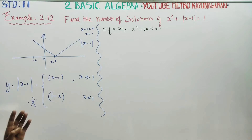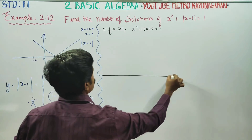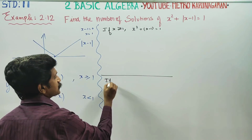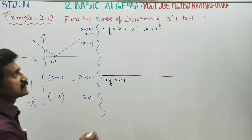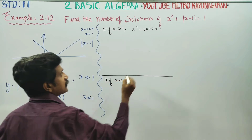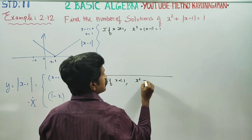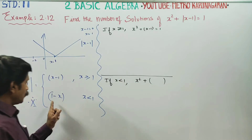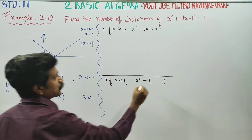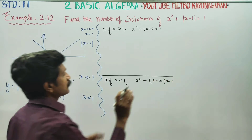Sum starts. It will be solved in two ways — Case 1 and Case 2. If x is less than 1, then x² plus modulus of x-1 equals 1, and modulus of x-1 becomes (1-x), so x² plus (1-x) equals 1.